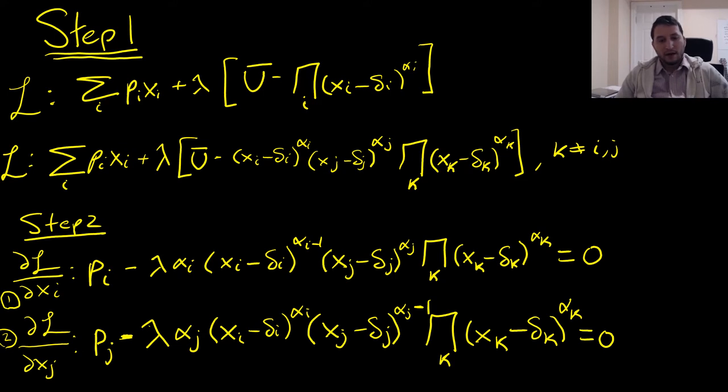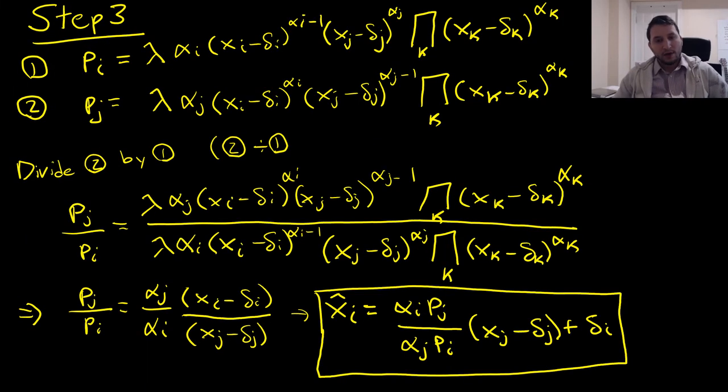Next, we're going to take our first order conditions down here, which are as follows. Next, we're going to rearrange these equations for equation one being good I and equation two being good J, respectively.